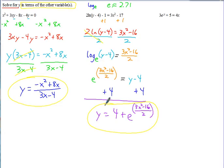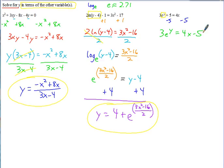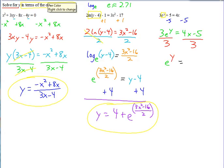Now let's take a look at a problem that's kind of the reverse of the one we just did. This time, again, we're solving for y, but the y is up in the exponent — you've got e to the y. So we're going to isolate that e to the y by first subtracting 5 on both sides. That gives us 3e to the y equals 4x minus 5, and then divide by 3. So we get e to the y equals 4x minus 5 all divided by 3.